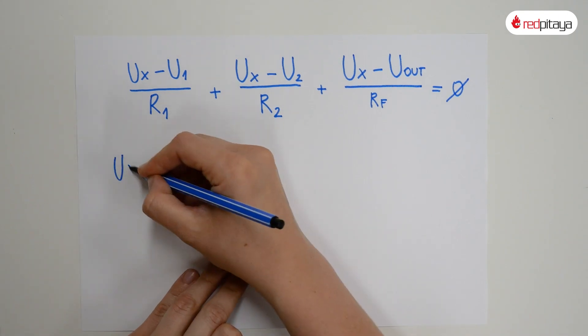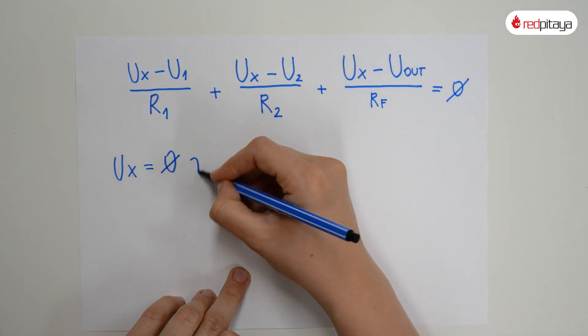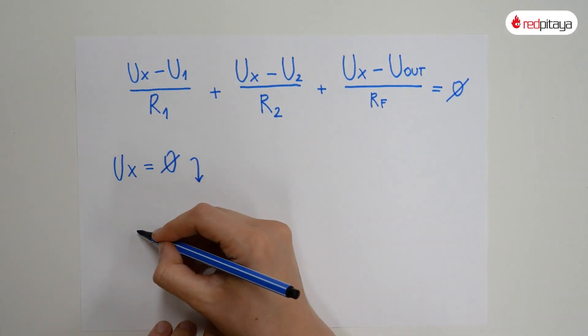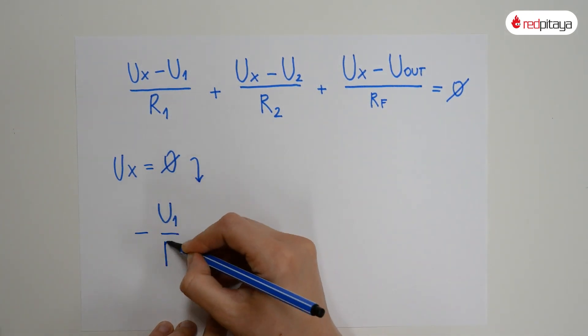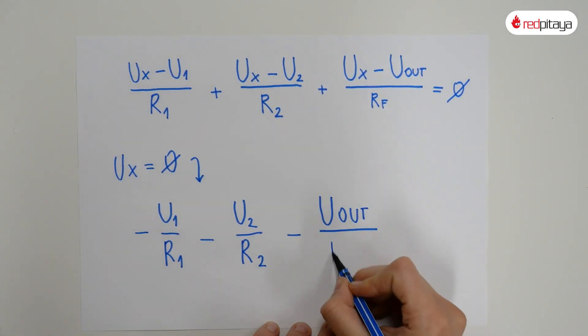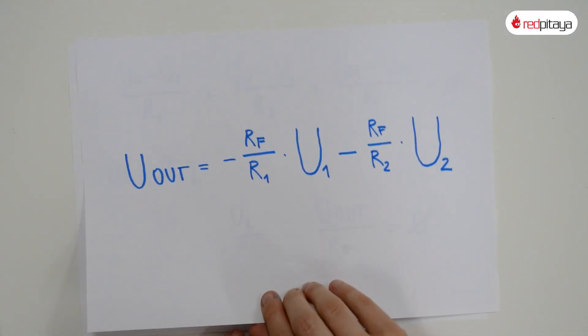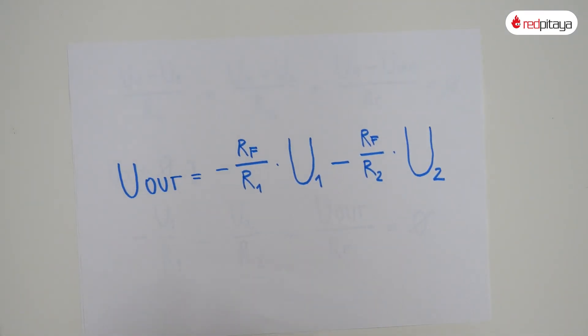Knowing that voltage X will always be 0V when operating normally, we can simplify too. This calculation wasn't too bad, but it took required knowledge about Kirchhoff's law that voltage X will be 0 and 3 lines of calculations.